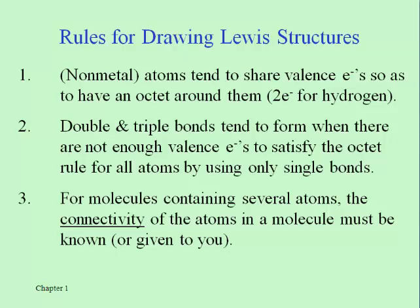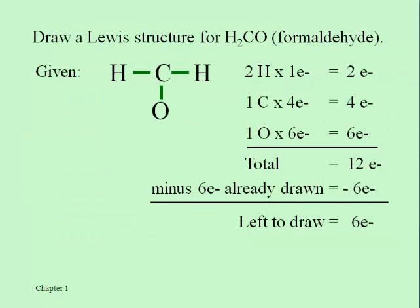As it says in rule three, the connectivity has to be given, but apart from that we can use these rules of valence electrons to come up with correct structures. The octet rule is our constant guide, but there's always going to be a set number of electrons we can use to get us there. The example for formaldehyde off to the right shows the calculation of how many valence electrons the whole molecule brings to the table — the grand total here is 12, six of which are already drawn.